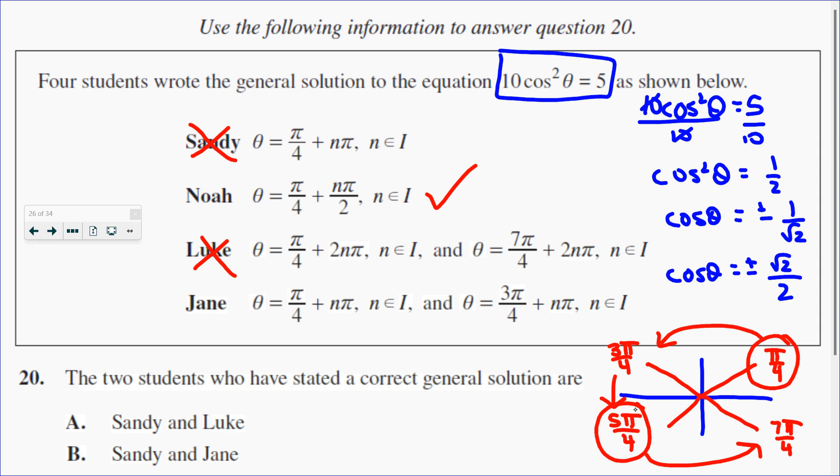And then she says 3 pi over 4, which is here, adding on a pi n, which will take us here. So Jane is also correct.